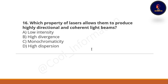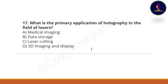Next question: Which property of lasers allows them to produce highly directional and coherent light beams? Option A: low intensity. Option B: high divergence. Option C: monochromaticity. Option D: high dispersion. The correct option is high dispersion.